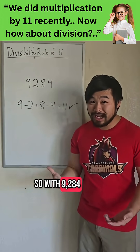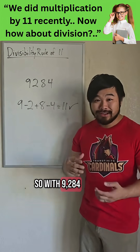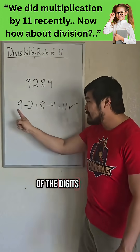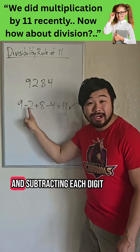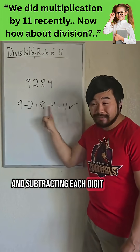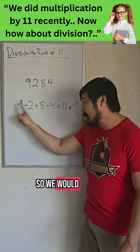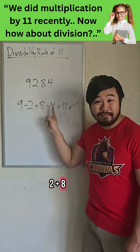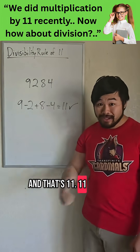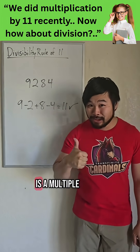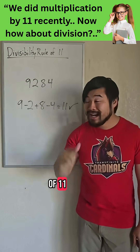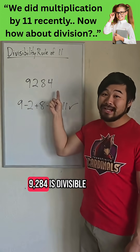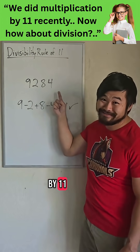So with 9,284, the alternating sum of the digits means that you alternate between adding and subtracting each digit. So we would do 9 minus 2 plus 8 minus 4, and that's 11. 11 is a multiple of 11, and that means 9,284 is divisible by 11.